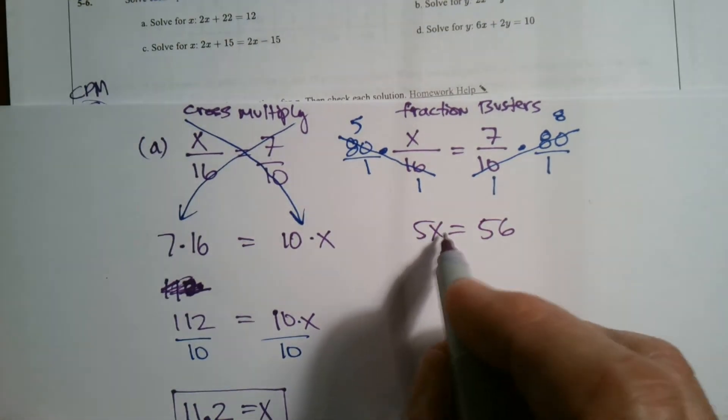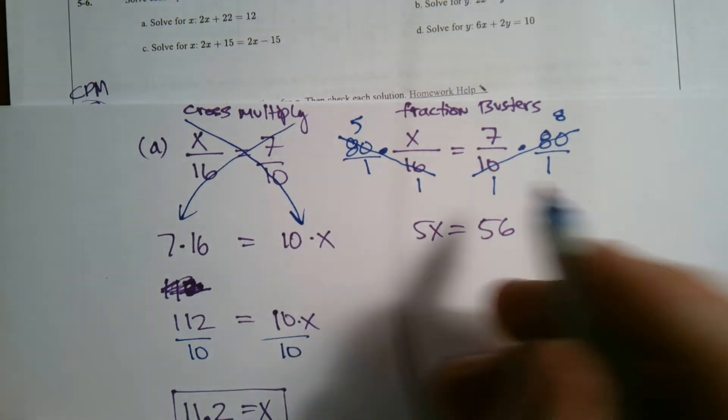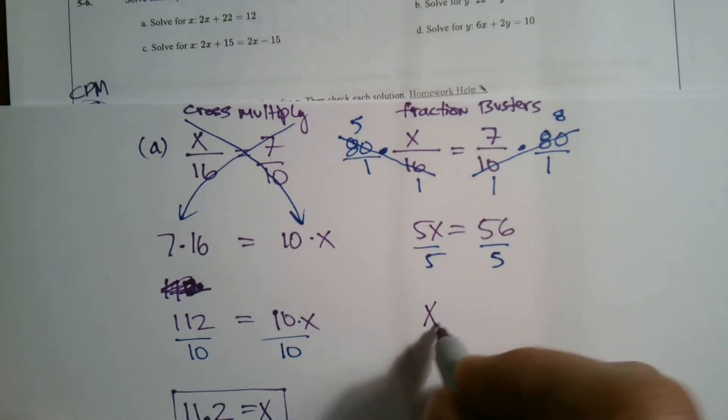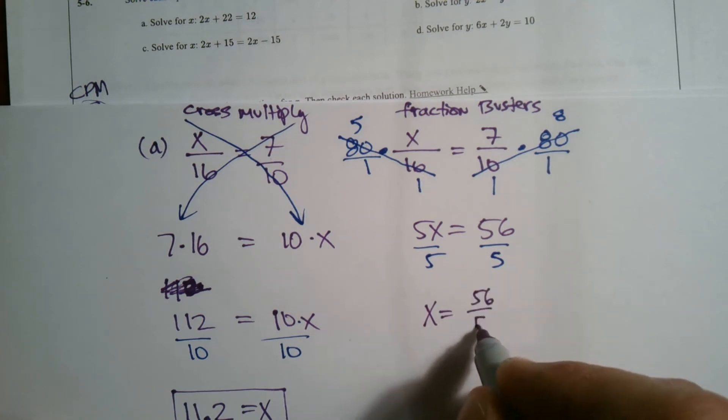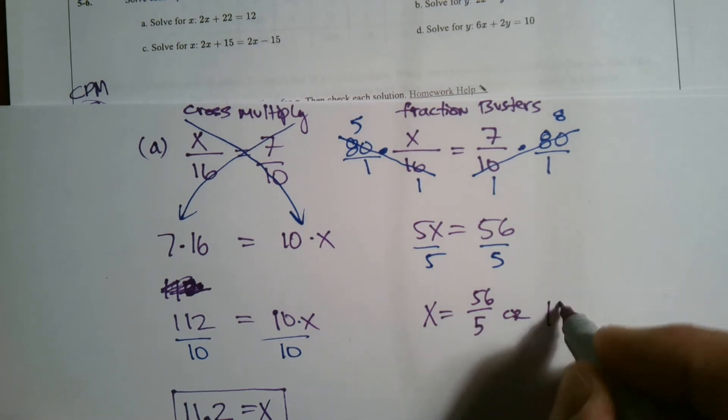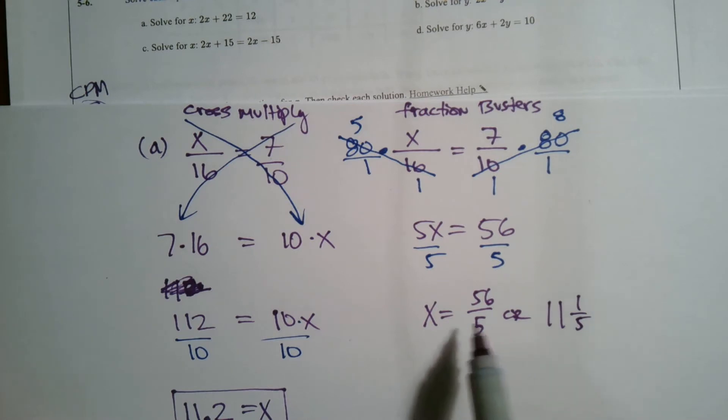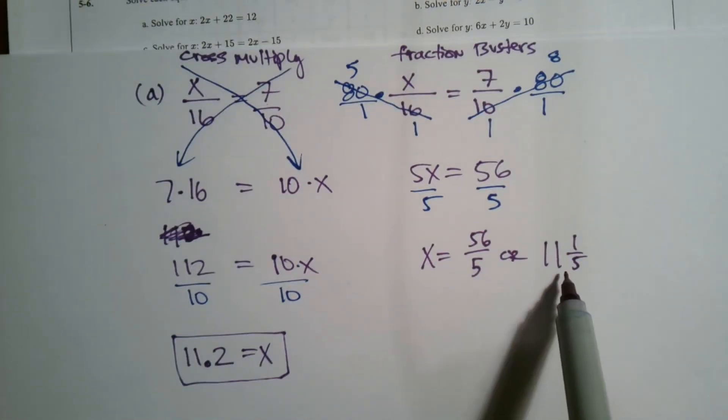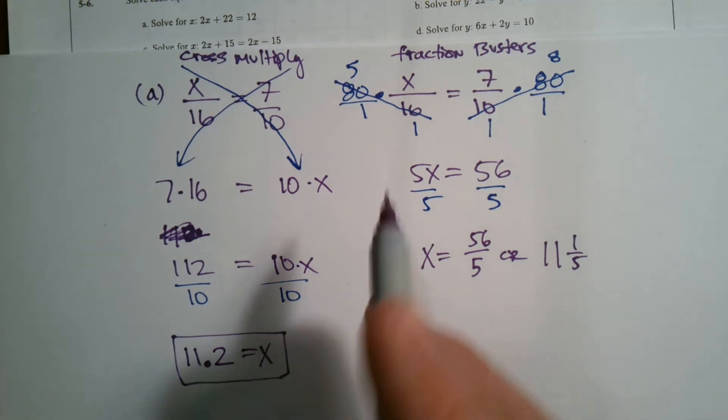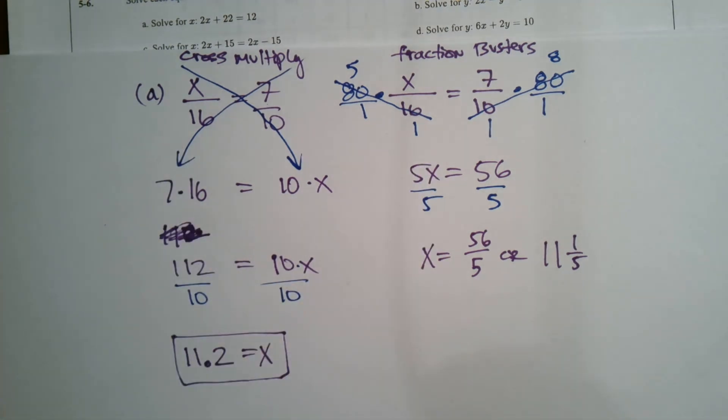So now I'm given the equation five X equals 56. No longer do I have fractions. And then I could divide both sides by five and I get the answer of 56 fifths. Or if you look at this and do the division here, that would be 11 and one fifth. If you change that to a mixed number, which 11 and one fifth is 11.2, 11 and two tenths. Correct. So we got the same answer, just different methods of getting there, either fraction busters or cross multiply.